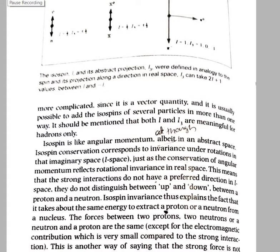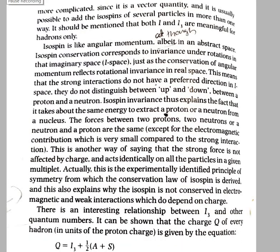I3 is meaningful for hadrons only. The conservation of angular momentum means the invariance of a quantity under rotation in real space. Isospin is like angular momentum in an imaginary space, so isospin conservation corresponds to invariance under rotation in imaginary space, just as conservation of angular momentum reflects rotational invariance in real space.